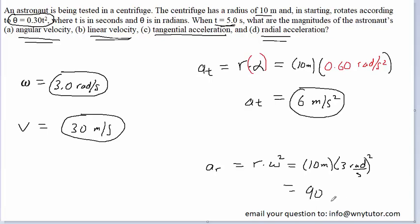So when we work that out, we're going to get 90 meters per second squared. And that will be the correct answer for the radial acceleration.